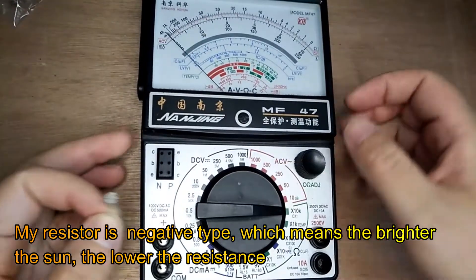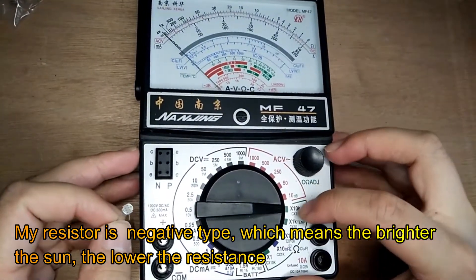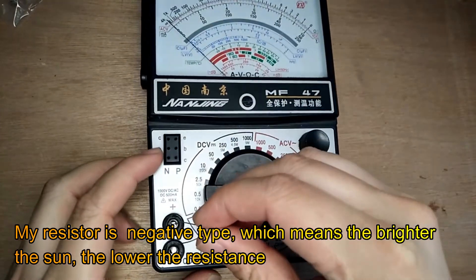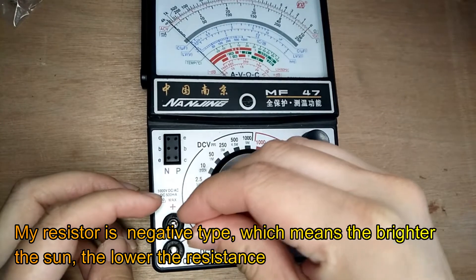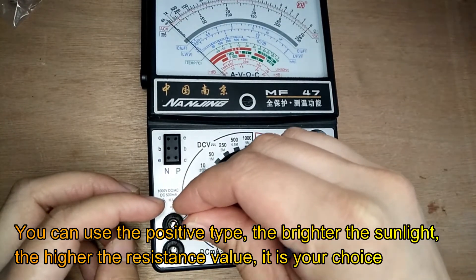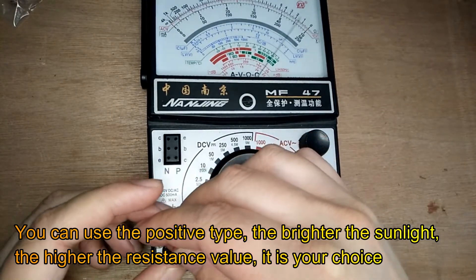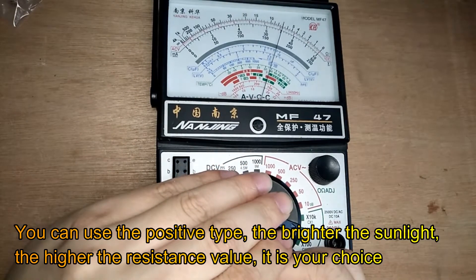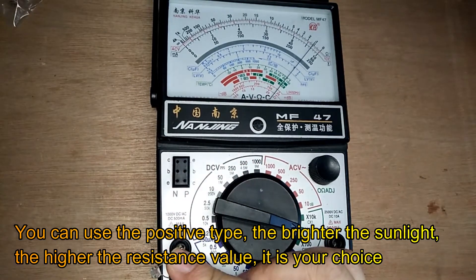My resistor is negative type, which means the brighter the sun, the lower the resistance. You can use the positive type. The brighter the sunlight, the higher the resistance value. It is your choice.